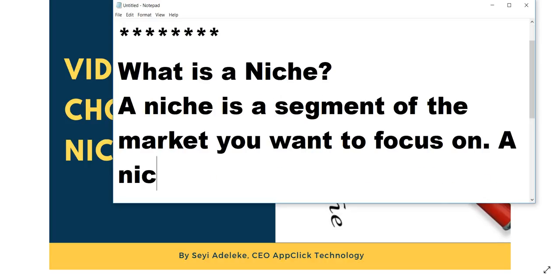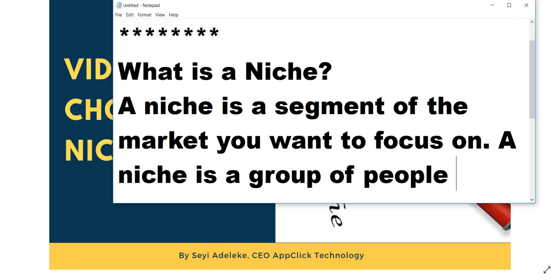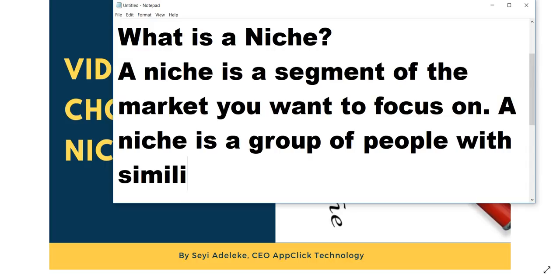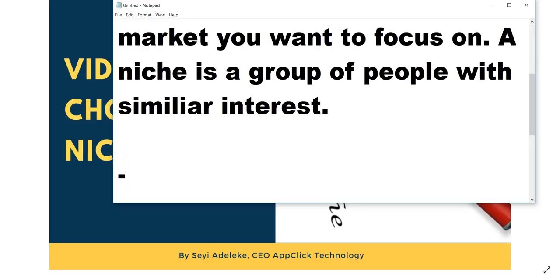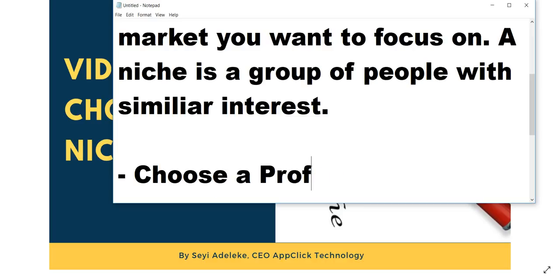A niche is a group of people with similar interests. The very first thing you have to do before creating your blog is to choose a niche — and not just any niche, you have to choose a profitable niche. There are a lot of niches, but you have to do your research and make sure the niche you're going for is profitable. You have to choose a niche that captivates you, one you have full passion for, that interests you — something you love talking about and can write on without much stress.